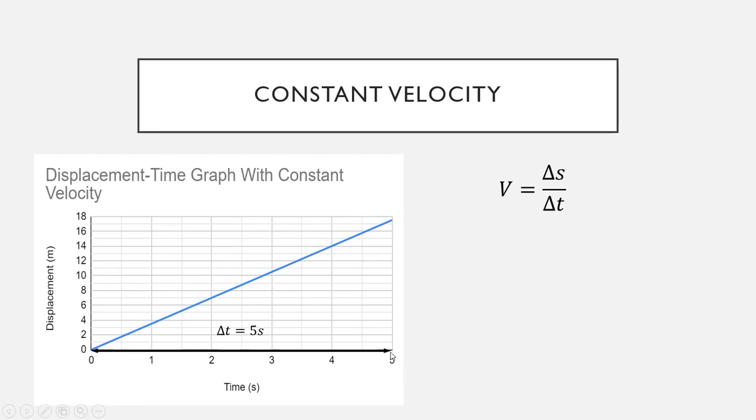Zero to five is five seconds. Then when we look at five seconds, how much has our displacement changed by? So we look up to here on the graph, read that off, and that will give us a change in displacement of 17.5 meters. So we've got our delta S to go into here.